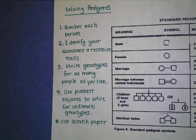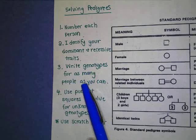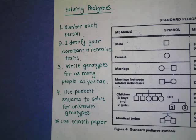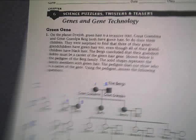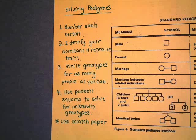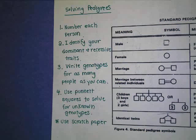Number three, you're supposed to write the genotypes for as many people as you can. There will usually be a little word problem or a sentence before you start a pedigree. On this one, there's a whole little paragraph about the background of the family, and they will tell you enough so you can identify what genotypes some people are. So again, write genotypes for as many people as you can.